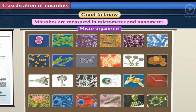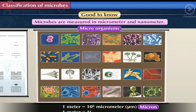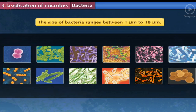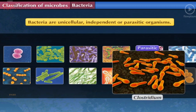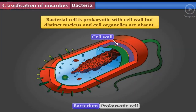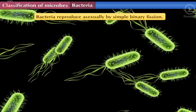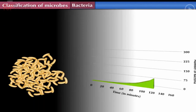Microbes are measured in micrometers and nanometers. 1 meter equals 10⁶ micrometers (also called microns), and 1 meter equals 10⁹ nanometers. Bacteria: The size of bacteria ranges between 1 micrometer to 10 micrometers. Bacteria are unicellular, independent or parasitic organisms; sometimes many bacteria together form colonies. The bacterial cell is prokaryotic with a cell wall, but distinct nucleus and cell organelles are absent. Bacteria reproduce asexually by simple binary fission, and in favourable conditions some can double their number in just 20 minutes.